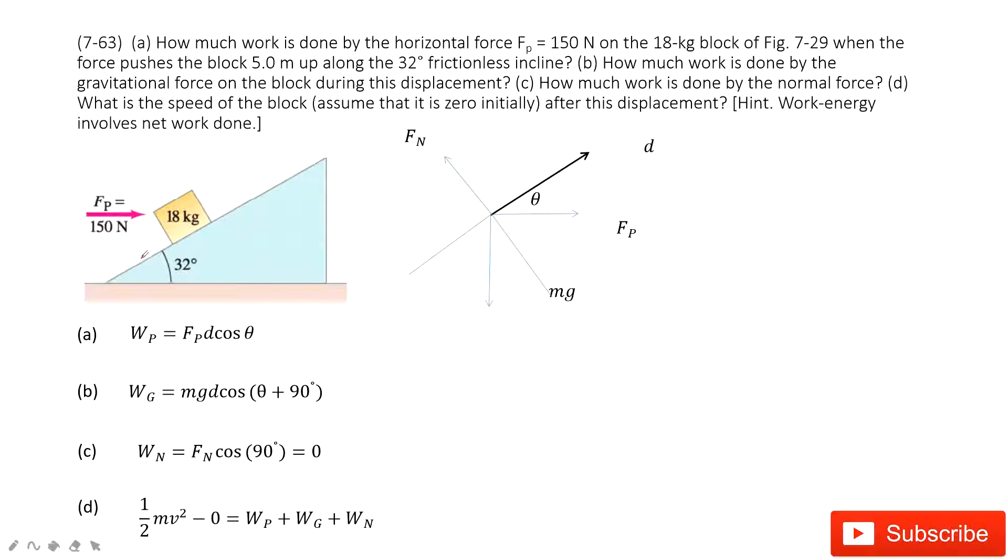We can see in this model, we have the slope. The angle theta is given, and we also have an object on this slope. Then for this object, we have a force Fp acting horizontally.